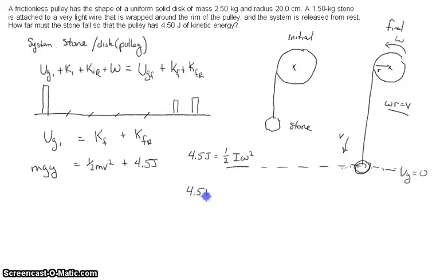4.5 joules of kinetic energy will equal one-half. The moment of inertia of a solid cylinder would be one-half mr squared. I can rearrange this to be omega equals v divided by r, and substitute in v over r times that whole quantity squared. This will simplify to one-fourth mv squared will equal 4.5 joules of kinetic energy.